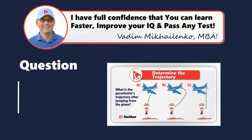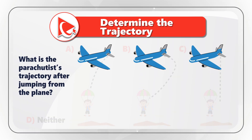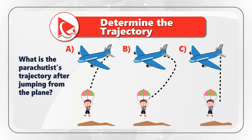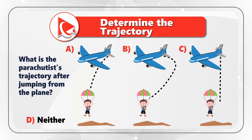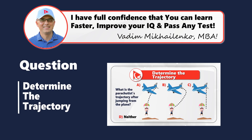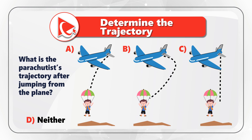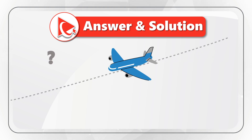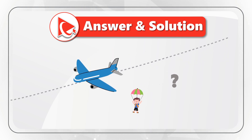Let's look at the question where you need to determine the trajectory after a parachutist jumps from the plane. Based on wind and other external conditions there would be multiple choices, but you need to select only one out of four — choices A, B, C, or choice D if none of the others is correct. Take a close look to see what the parachutist's trajectory is after jumping from the plane. I'm moving forward to share with you my version of the answer. To better understand the answer, we need to determine what changes from when the parachutist is inside the plane to when they jump.